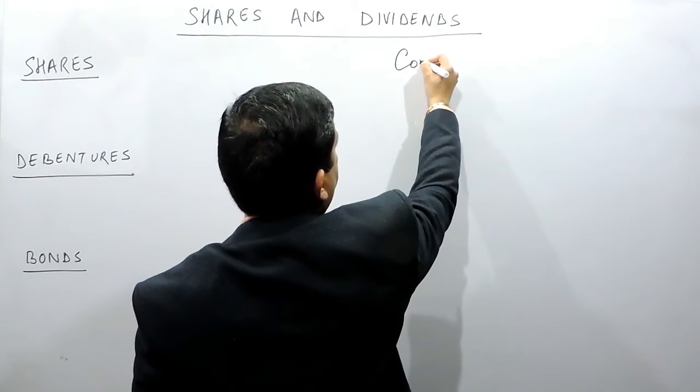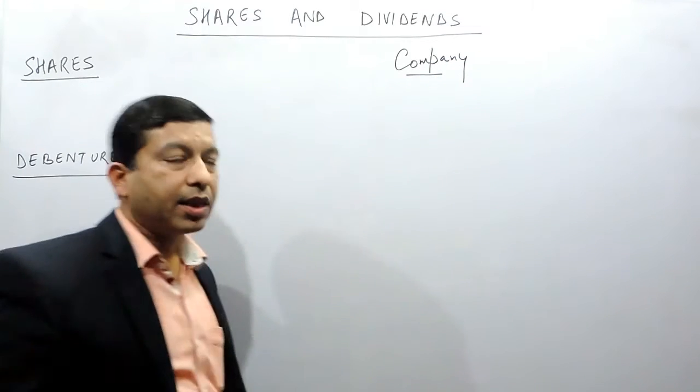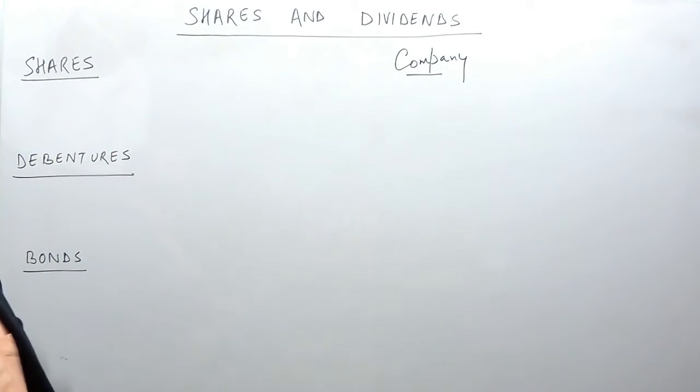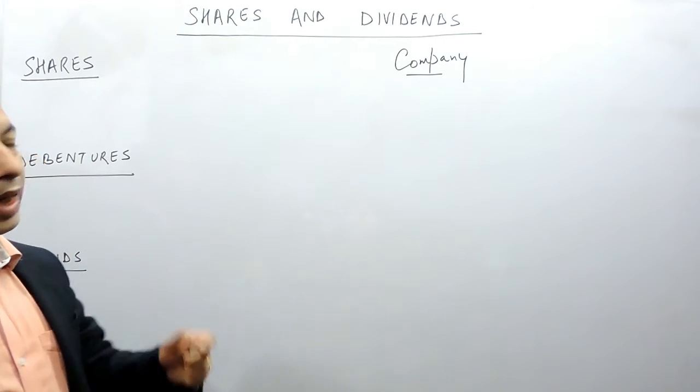Now we talk about a company first of all, because in this chapter the most important thing is the fundamentals of the company. A company runs on two bases: one in which a person becomes the partner of the company, and in the other case the company can take a loan from the person.